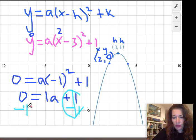So we are left with negative 1 equals 1a, which actually would mean that negative 1 equals a. So our a value is therefore negative 1.